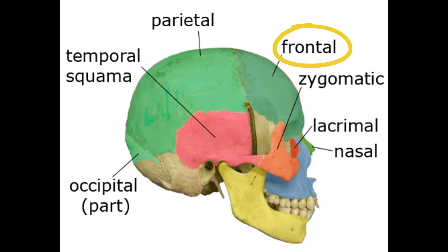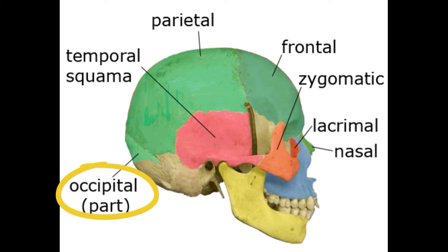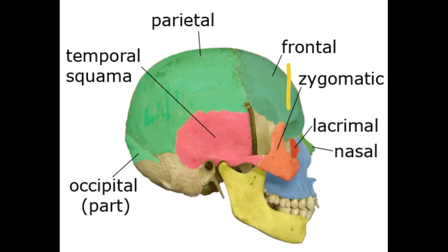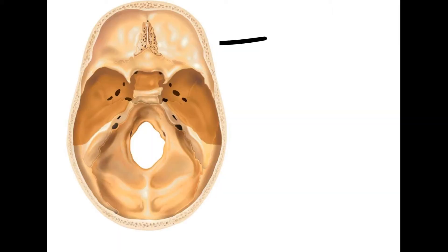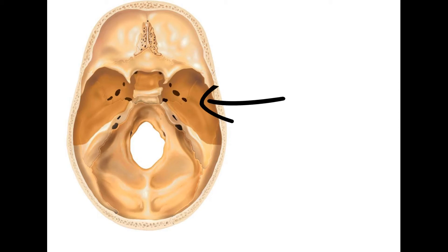Hey guys, it's Leila. Today we'll speak about the frontal, parietal, and occipital region of the skull. This is the frontal bone, then you've got the parietal bone behind that, and then the occipital bone behind that. We've already spoken about the temporal squama, the lacrimal bone, and the zygomatic bone in other videos. The frontal lobe goes into the frontal bone, the parietal lobe into the parietal bone, and then the occipital lobe into the occipital bone.